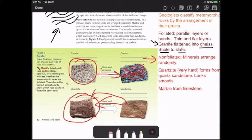Marble is created from limestone, so limestone through heat and pressure will create marble. So marble, quartzite, and gneiss are all different types of metamorphic rocks.